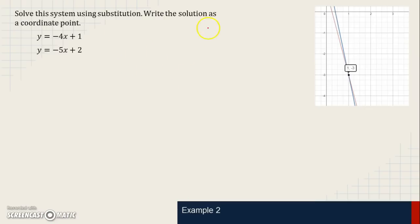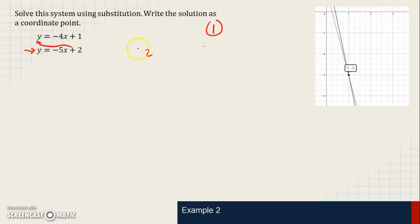This is the last example for today, and the steps remain the same. Step 1: identify the equation with the isolated variable. In this case, both equations have y isolated, so it doesn't matter which one we use. Step 2: substitute what y equals — in this case, negative 5x plus 2 — for y in the other equation. So we have negative 5x plus 2 equals negative 4x plus 1.